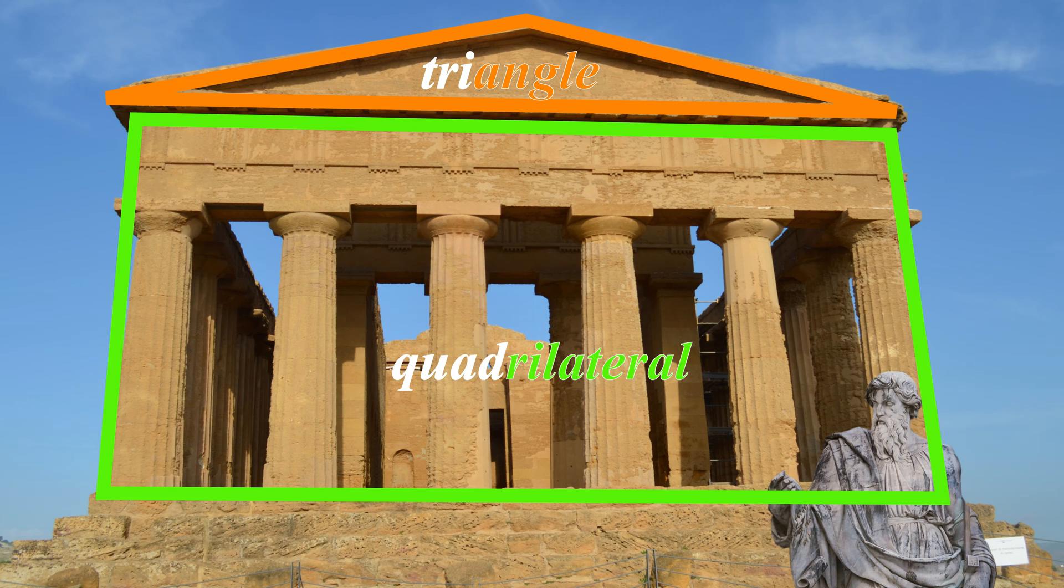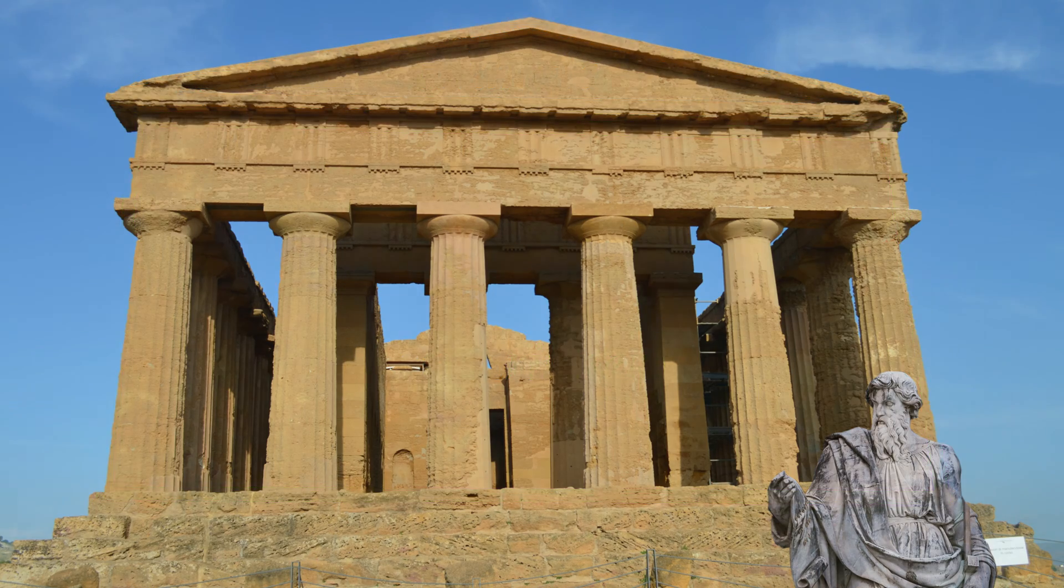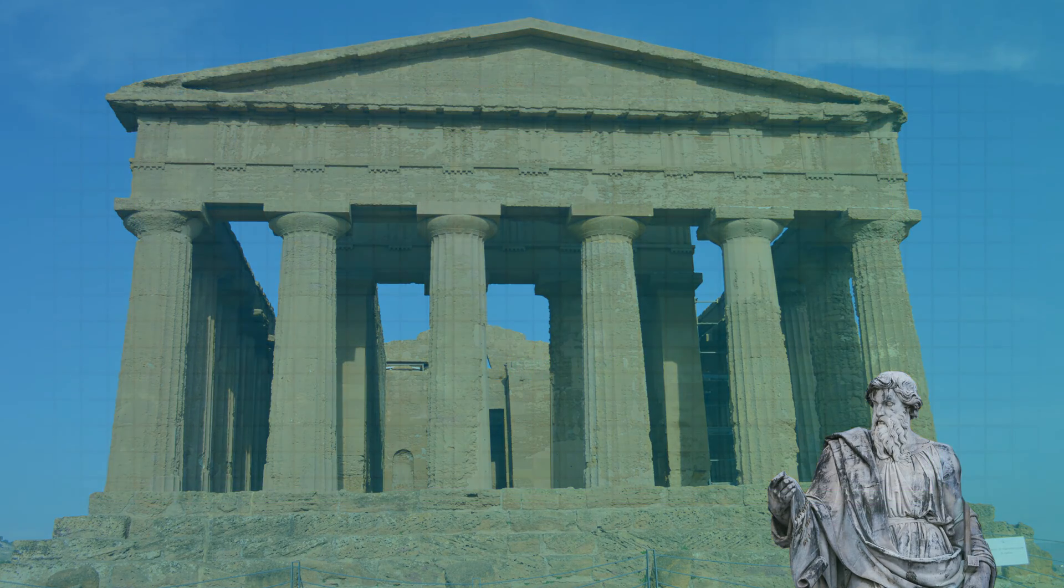So the names of polygons are based on the number of sides they have, but also on other features or properties of those sides and angles.